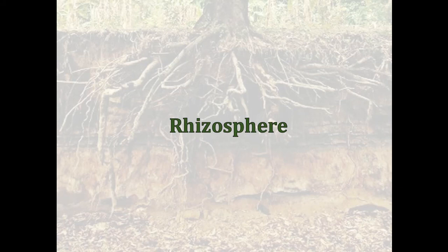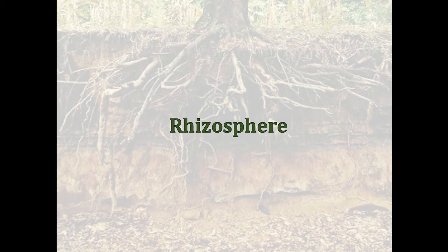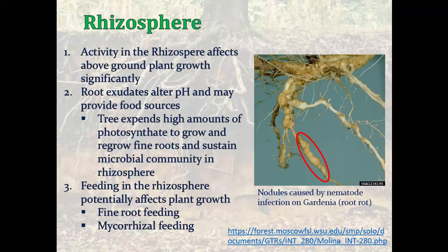In this video we will be talking about the rhizosphere. The rhizosphere is a very small area that exists between the root and the soil. It's interesting because it's such a small area, but it's incredibly important because that's where the plant is interacting with the soil. That interaction can be very different than the bulk soil conditions, but from plant management, it's also the most important. Activity in the rhizosphere affects above-ground plant growth significantly.